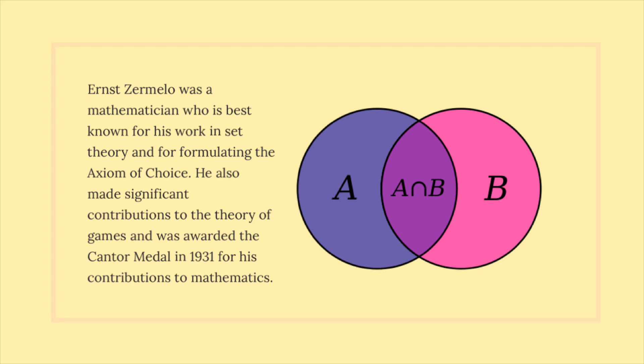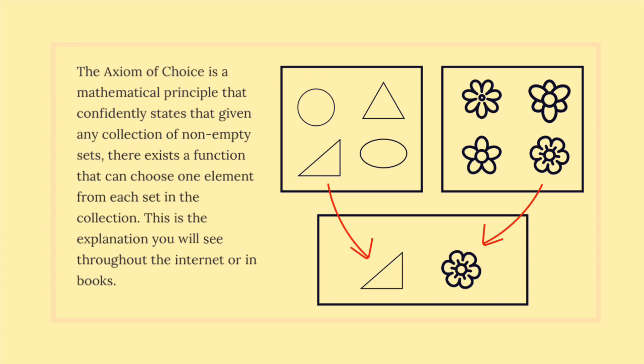Ernst Zermelo was a mathematician who is best known for his work in set theory and for formulating the axiom of choice. He also made significant contributions to the theory of games and was awarded the Cantor Medal in 1931 for his contributions to mathematics.